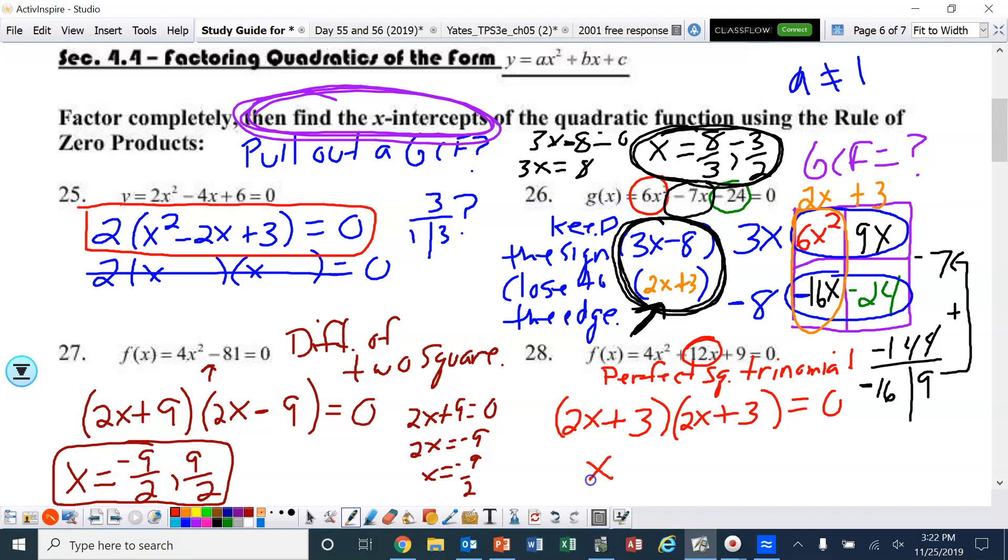All right. Now what makes that equal to 0? Well, they're both the same. Therefore, there's only one answer and it would be x equals negative 3 over 2. All right. That is section 4.4. Good luck.